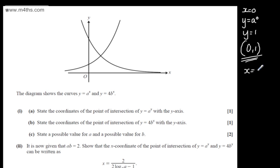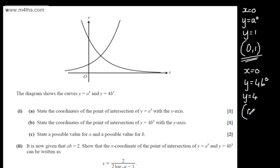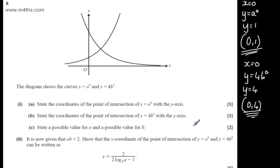Again, x is going to be 0. y will be equal to 4 lots of b to the 0. b to the 0 is 1, so y is going to be 4. So we can state that that point right there will be (0, 4). So that's the first two parts done for two marks.